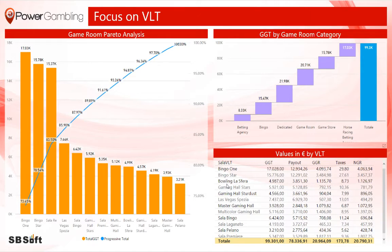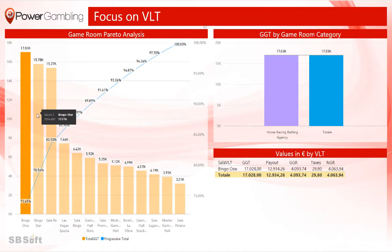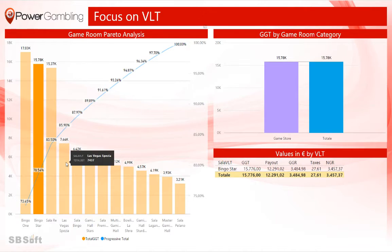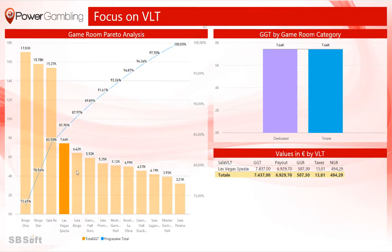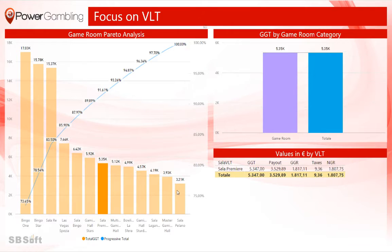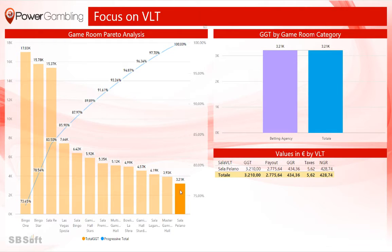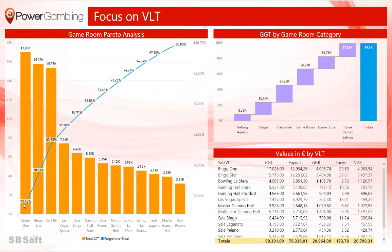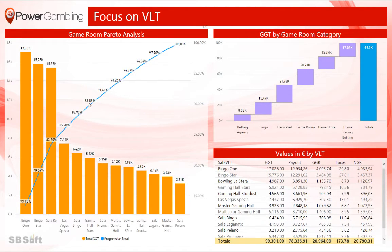On the left, you can see a Pareto Analysis. The Pareto Analysis mixes a bar chart with a line chart, where bars show a descendant gross gaming total from the highest to the lowest value by Video Lottery game room, and the line displays the percentage of progressive total.